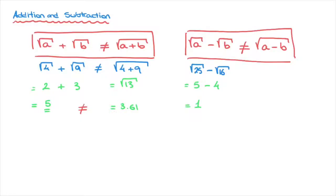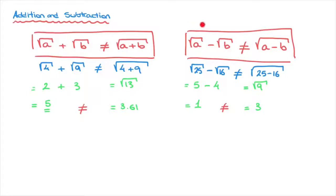On the right-hand side, though, we would have the square root of twenty-five minus sixteen, and that's equal to the square root of nine. But the square root of nine is equal to three. And clearly, one is not equal to three. So the square root of twenty-five minus the square root of sixteen is not equal to the square root of twenty-five minus sixteen.